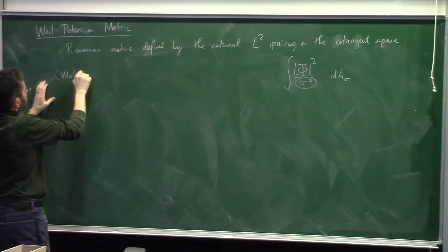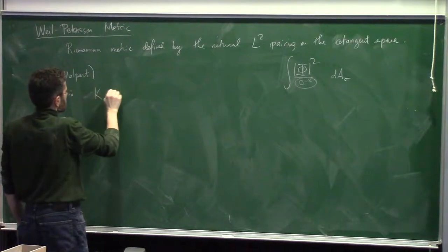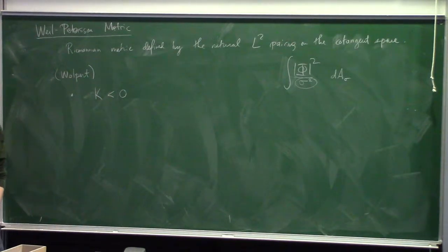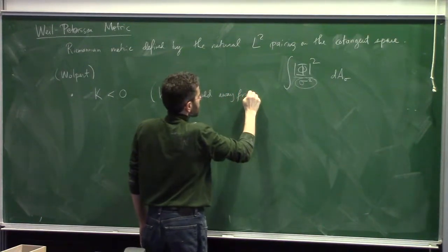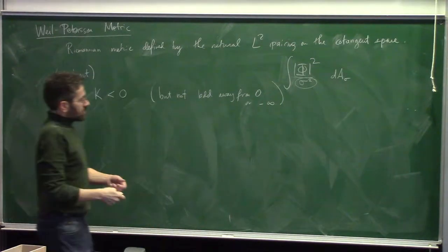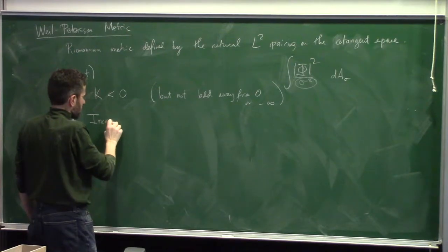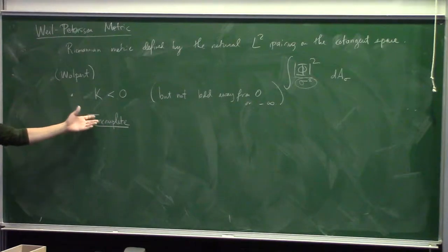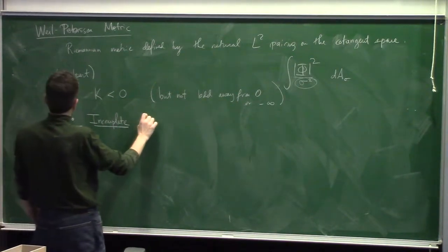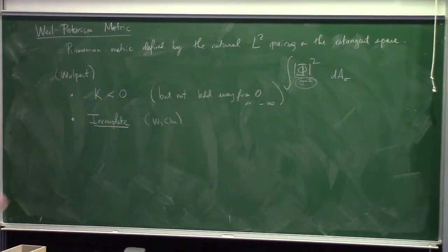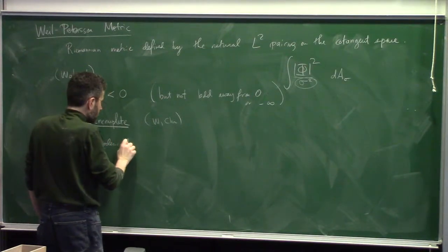Theorems about this metric are due to Wolpert. The curvature: this Riemannian metric has sectional curvature negative at every point, but it's not pinched - not bounded away from either zero or negative infinity. That's bad - it's kind of singular. It is also incomplete.